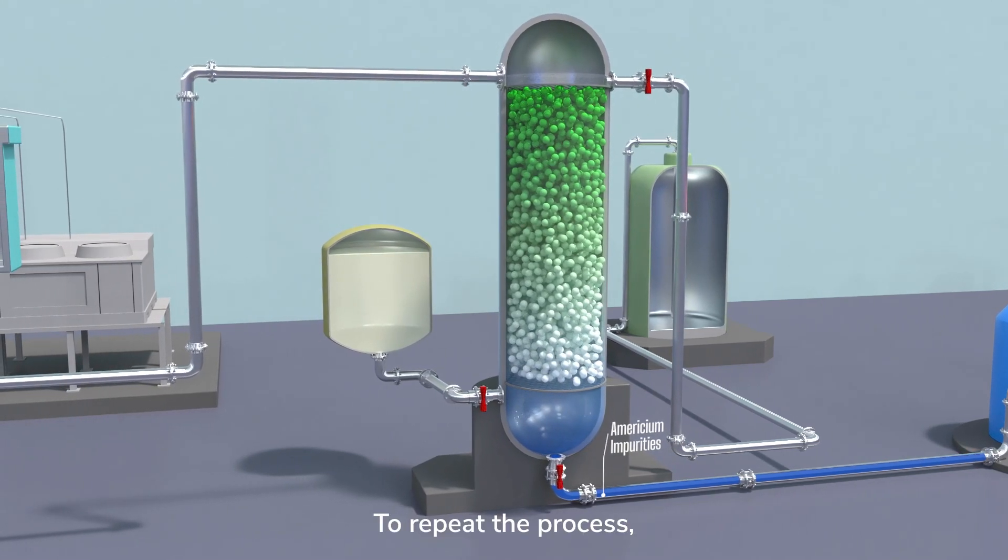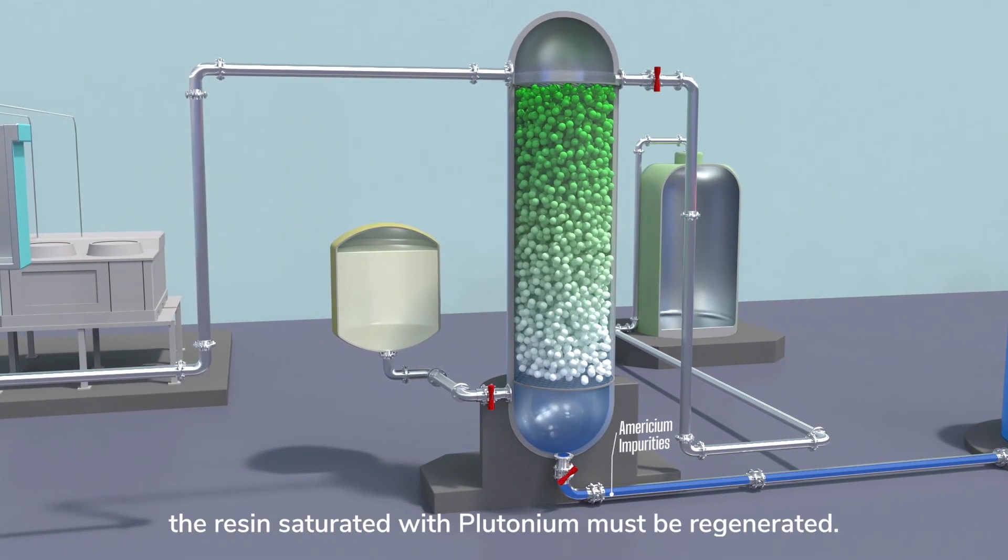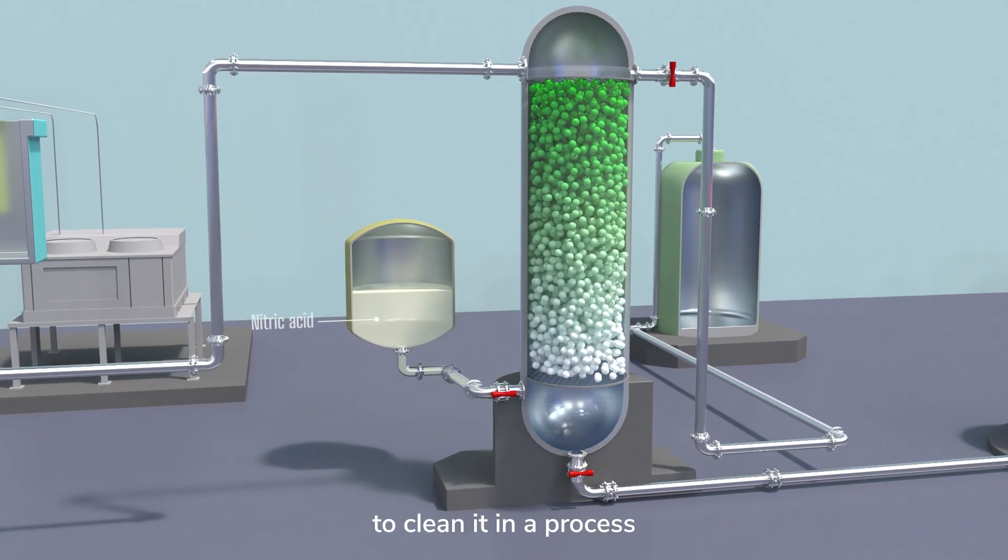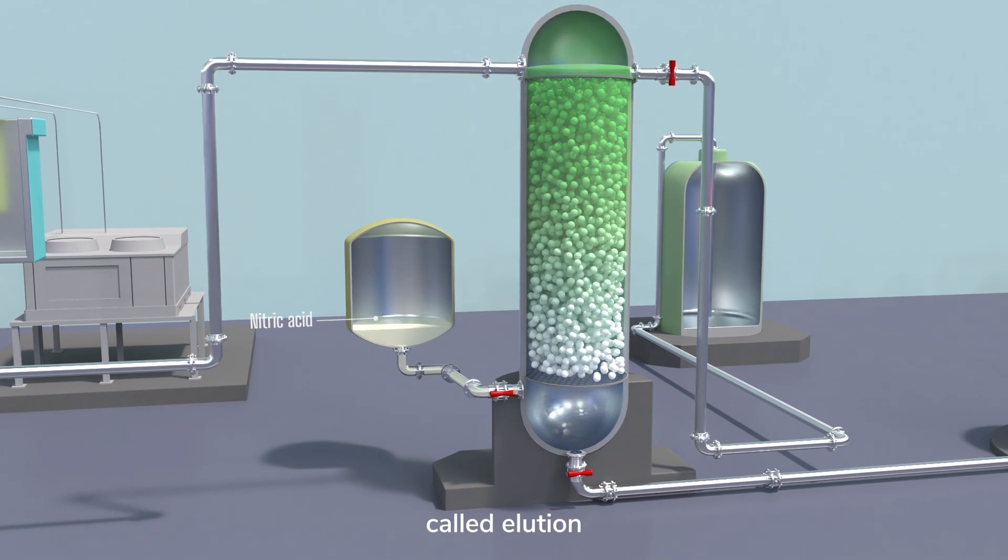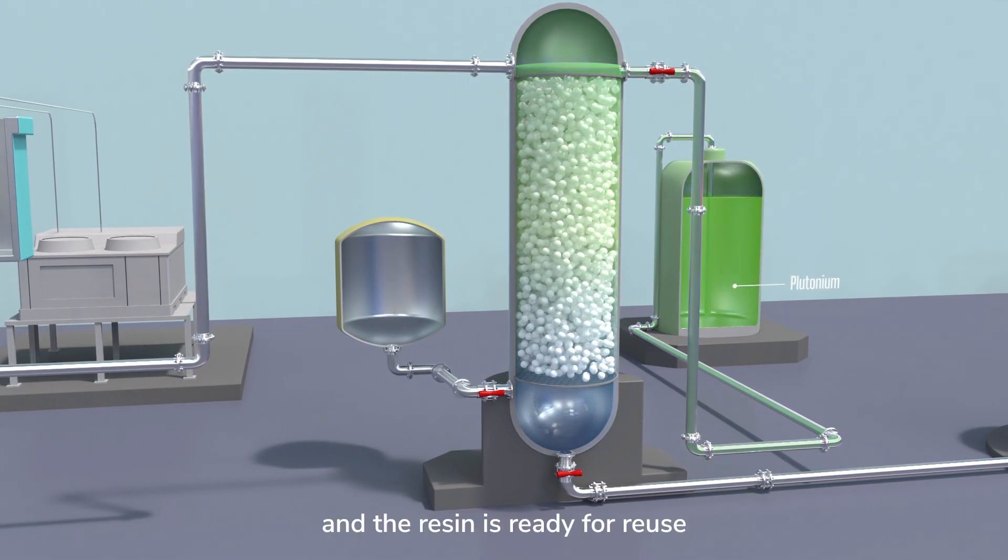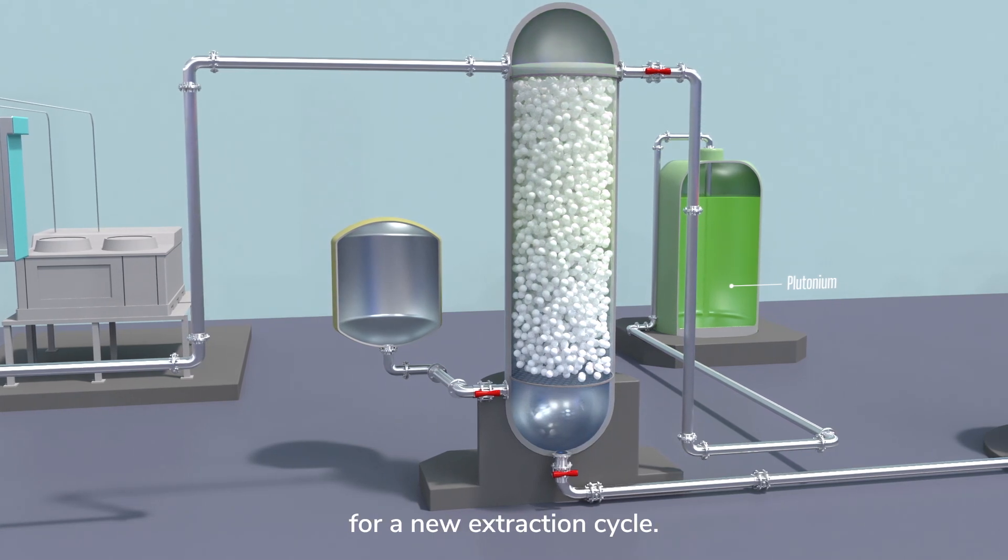To repeat the process, the resin saturated with plutonium must be regenerated. Nitric acid is used to clean it in a process called elution. The released plutonium is evacuated and the resin is ready for reuse for a new extraction cycle.